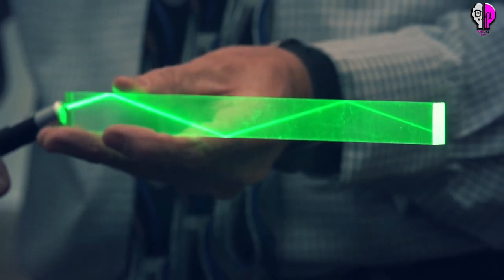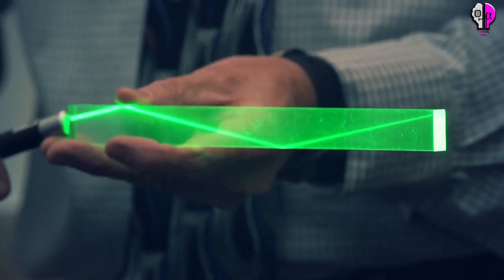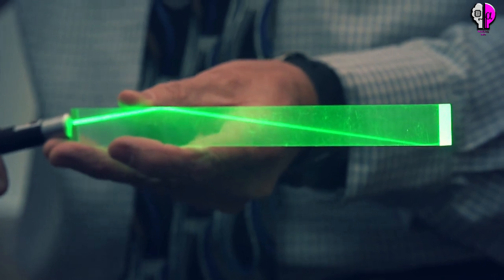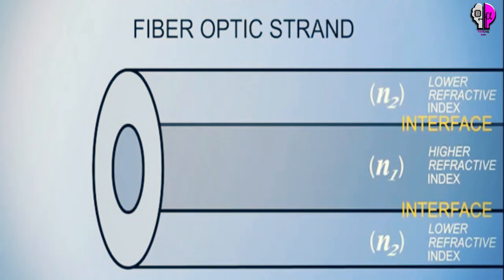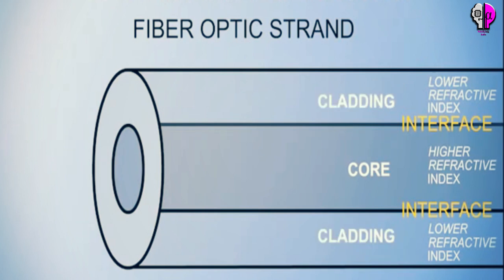The other thing that keeps light in the pipe is the structure of the cable which is made up of two separate parts. The main part of the cable in the middle is called the core and that's the bit the light travels through.